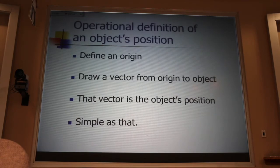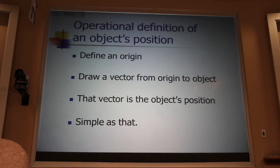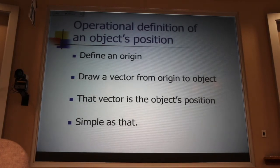Now, here's the operational definition. You define an origin, draw a vector from the origin to the object, that's it. That's all there is. It's not hard.